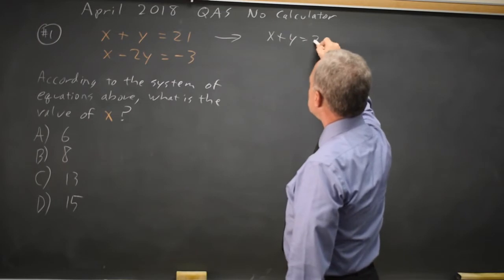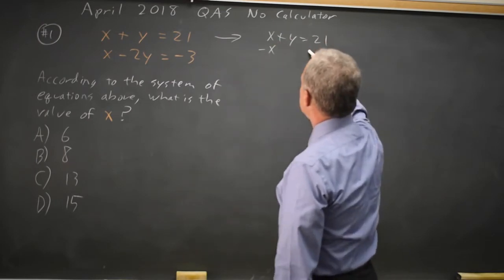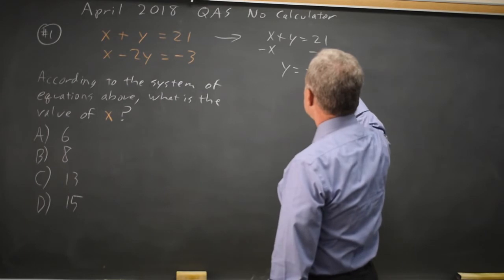I have x plus y equals 21, subtract x from both sides, and I get y equals negative x plus 21.